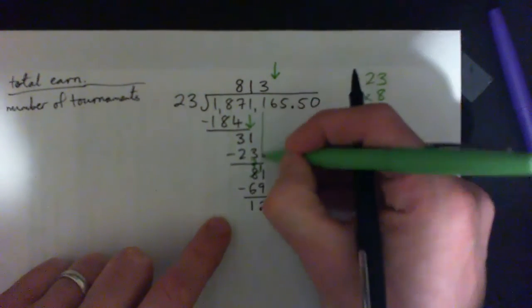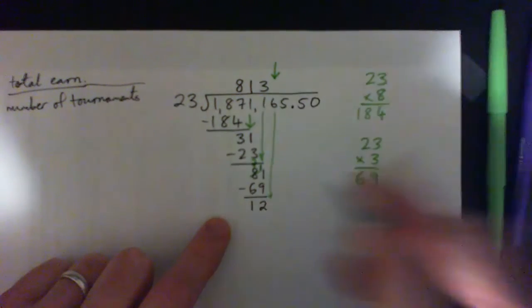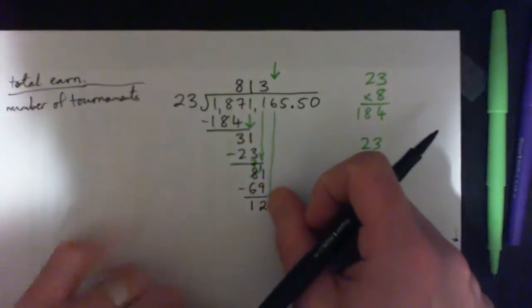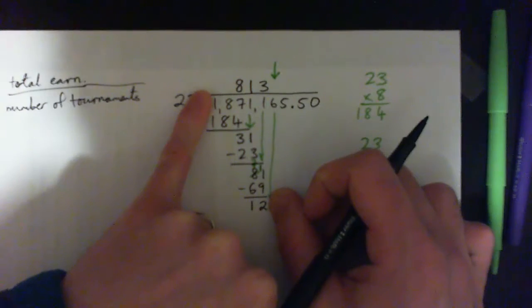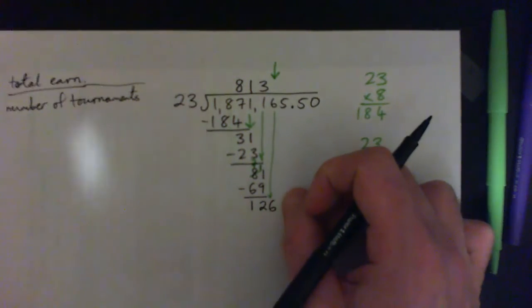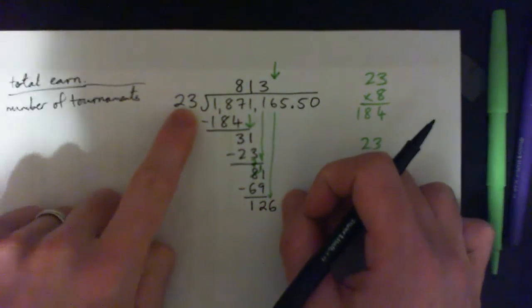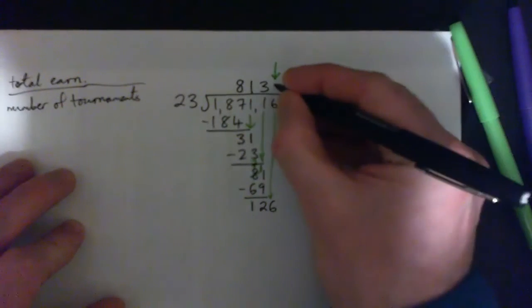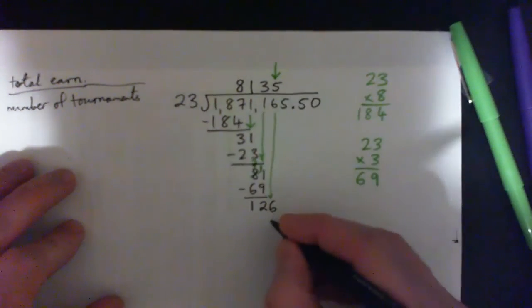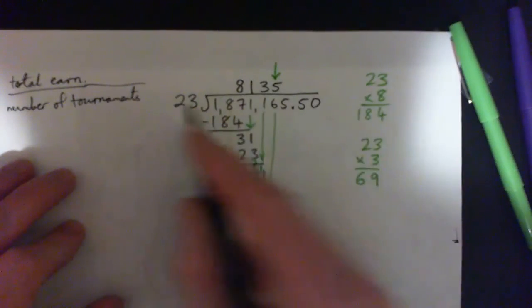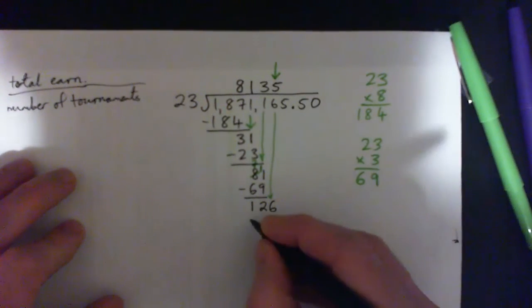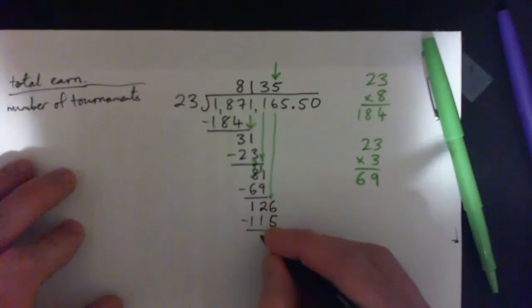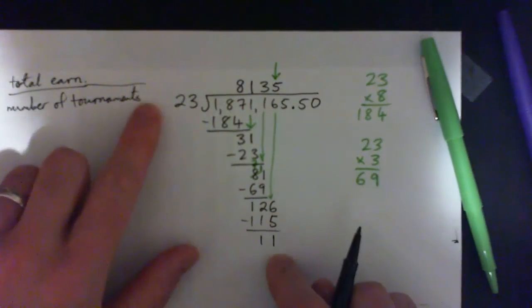So I brought the 1 down here. So let's bring the 6 down here. 126. 23 into 126. What would that be? Well, 2 into 12 goes 6 times. So somewhere around there, you think? 2 10 23 is 230. 5 of them would be 115. So I'm going to try 5. 5 threes is 15. Carry 1. 5 twos is 10 and 1 is 11. 150. 6 minus 5 is 1. 2 minus 1 is 1. So 11 is less than 23. That was good work also.